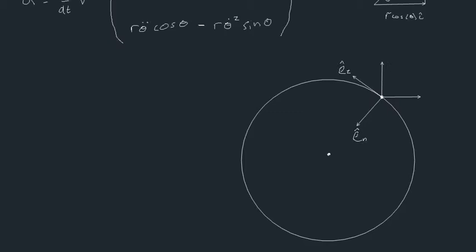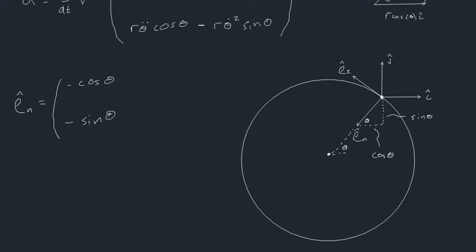To re-describe our acceleration in terms of these new unit vectors, we use geometry. The angle theta allows us to form a small triangle. We find that eₙ-hat equals negative cosine theta in the i direction minus sine theta in the j direction — because the top element refers to i and the bottom element refers to j.